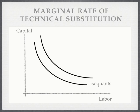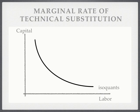Just like indifference curves, as we move to the right we have higher levels of production. One thing we want to consider is the marginal rate of technical substitution, which is the slope of the isoquant line at any particular point in time.